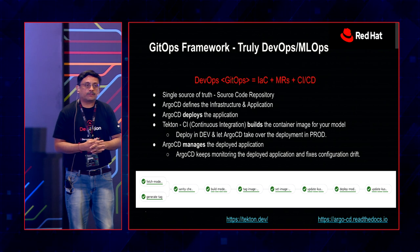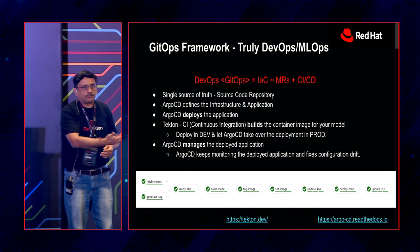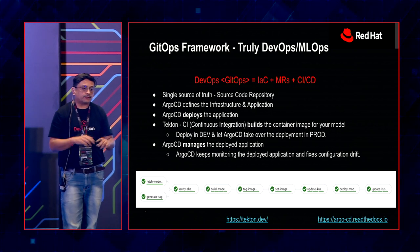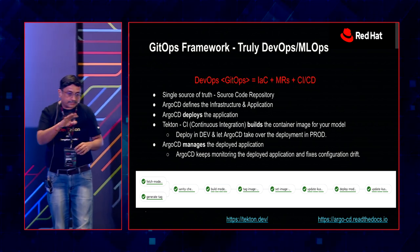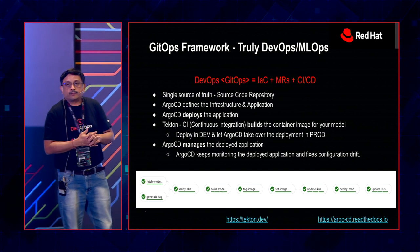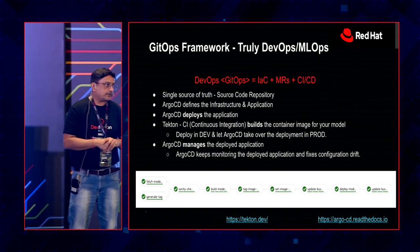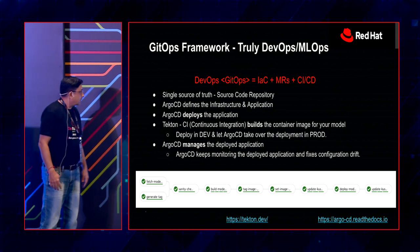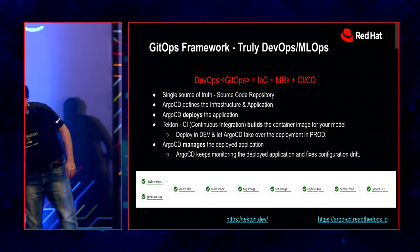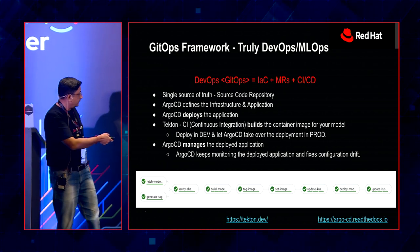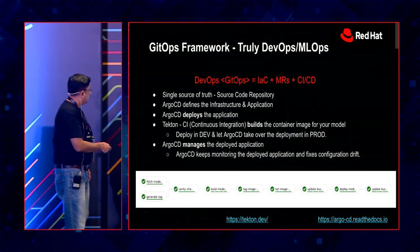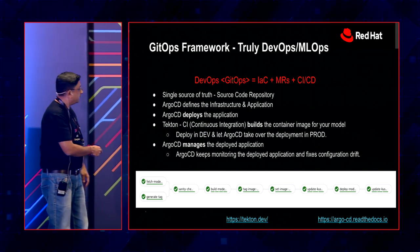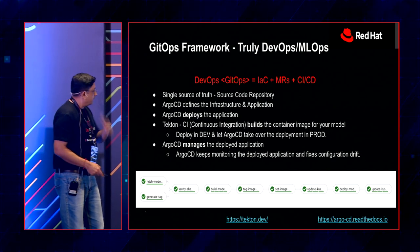That's how you get a new image with new model or new application source code into production. Argo CD helps to monitor the deployed application and fix any configuration deviations. We fetch the model, generate a tag, and these are two parallel tasks running in Tekton.